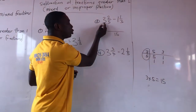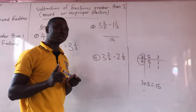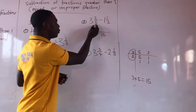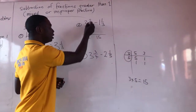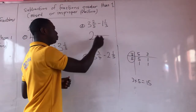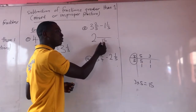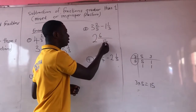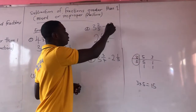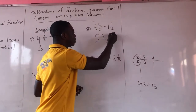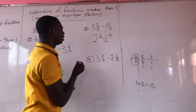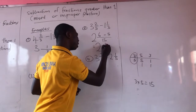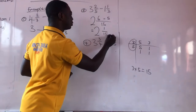Now subtract the whole numbers: 3 minus 1 gives me 2 whole numbers. Next, use the denominator to divide the LCM. 5 goes into 15 three times; 3 times the numerator 2 gives me 6. Then 3 goes into 15 five times; 5 times the numerator 1 gives me 5. Now subtract the numerators: 6 minus 5 gives me 1. So the final answer is 2 whole numbers and 1 out of 15.